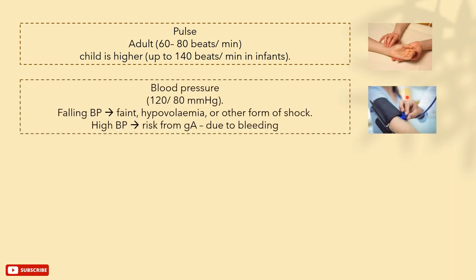Blood pressure. Normal adult blood pressure is about 120 systolic over 80 diastolic millimeters of mercury. A falling blood pressure may indicate a faint, hypovolemia, or other forms of shock. High blood pressure indicates a very high risk for the patient going under general anesthesia due to potentially uncontrolled bleeding. Pulse and blood pressure are affected by gender, age, body weight, and whether the person is an athlete.